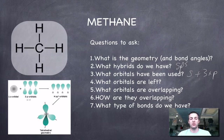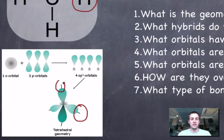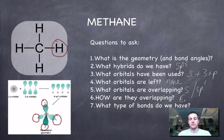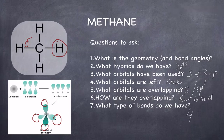If carbon has mixed its s with its three p orbitals, it doesn't have any orbitals left — it's turned all of them into sp3 hybrids. These sp3 hybrids overlap with hydrogen's electrons, which are in its 1s orbital. So s is overlapping with sp3, and the only way that can happen is end to end. Therefore we have four sigma bonds — each and every one of these bonds is a sigma bond.